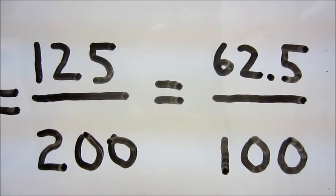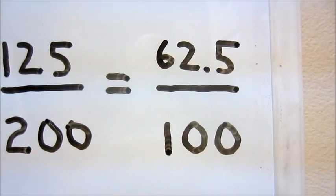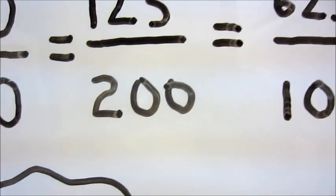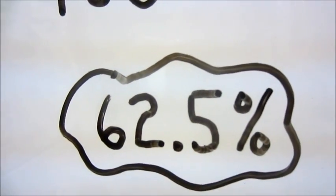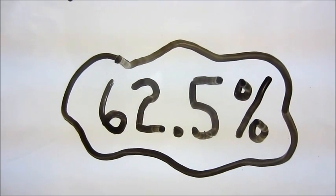Therefore we're going to stick with 62.5 over 100. Now all we do is take our fraction bar and our denominator of 100 away, keep our 62.5, add a percent sign for a final answer of 62.5%.